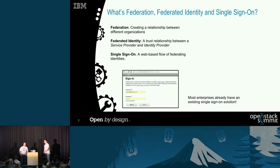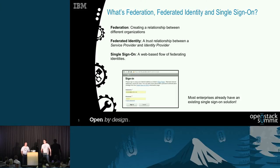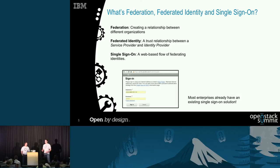Federation, if you break it down into basic terms, is when two different organizations are trusting each other. In the Keystone case, what we want to see is two different organizations trusting each other for identity. Keystone can have identity providers and trusts that the users have already authenticated with those providers, and they're now able to do things in Keystone.